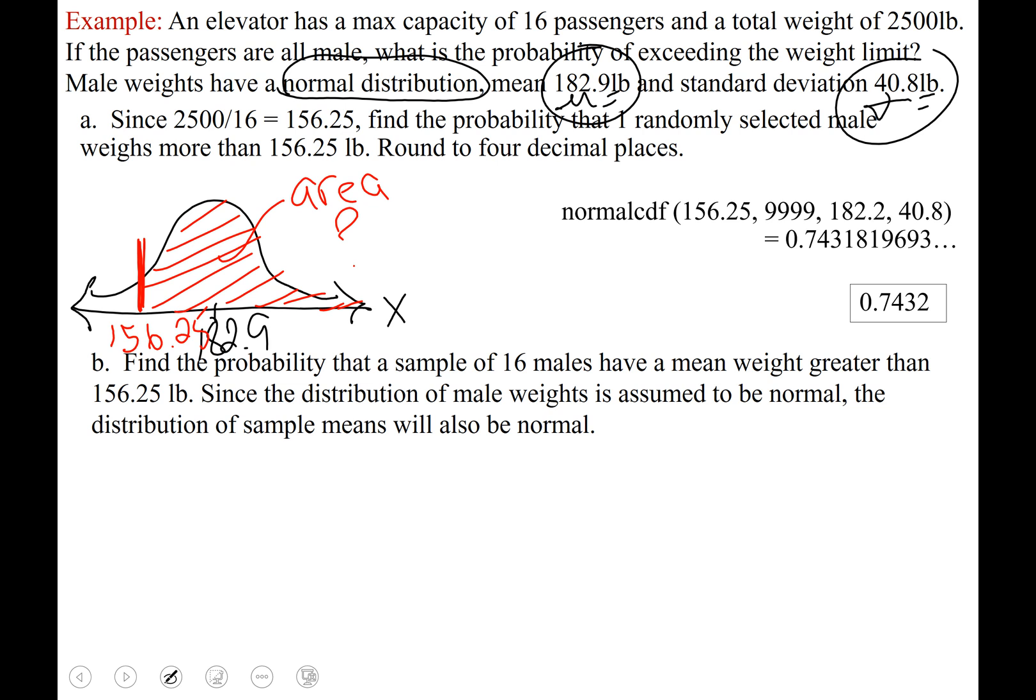Okay now let's talk something more powerful. Part b, let's not just talk about one random male's weight, let's talk about a sample of 16 males and their mean weight. Will that be more than the 156.25 pounds? And that's really what's going to determine the probability that if the passengers are all males the weight limit is exceeded. Okay so now we are talking 16 males, that means n equals 16. When you see something like this I want you to ask yourself should I be applying the central limit theorem to this question.